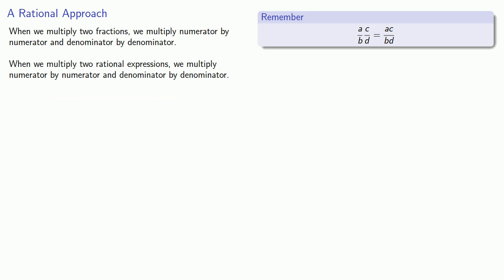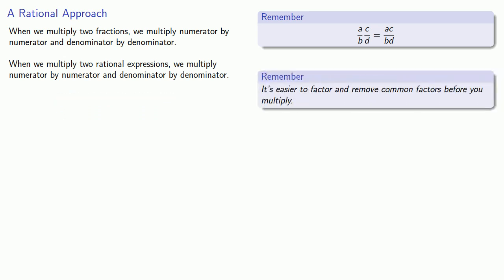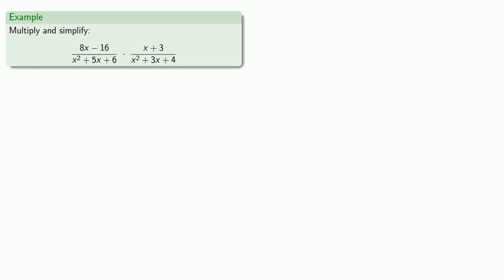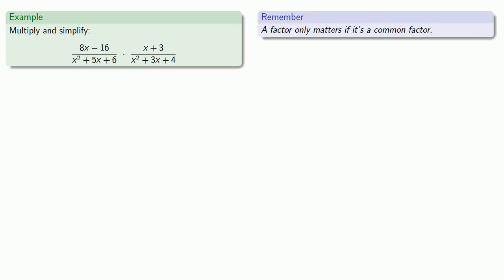There's one important thing to keep in mind: it's easier to factor and remove common factors before you multiply. So let's try to multiply two rational expressions. Because our end goal is to remove any common factor, remember that a factor only matters if it's a common factor.